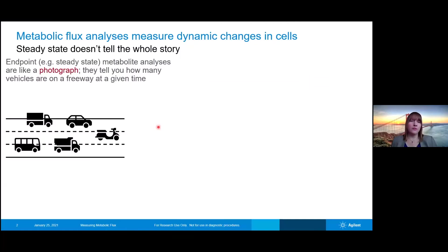To give a little bit of background on why metabolic flux measurements can be so important, I wanted to direct you to what common cell analysis technologies typically do. They often take a steady state or endpoint measurement, which gives us a view of the cells that is like a photograph. In this example, you might have a highway with cars on it, and the information you're getting is just the number of cars in a given section of the highway at a given time.